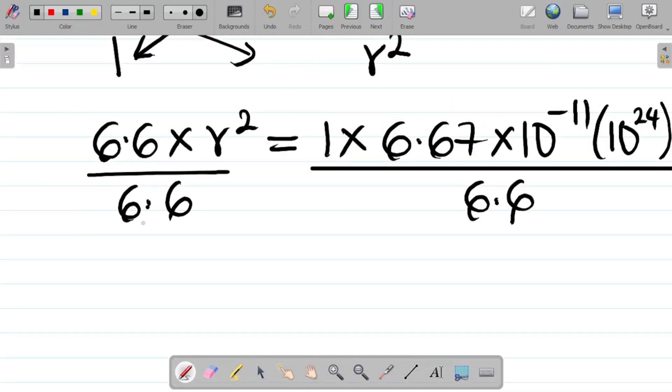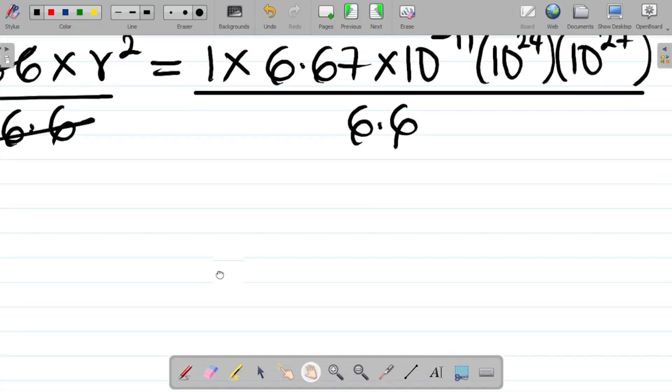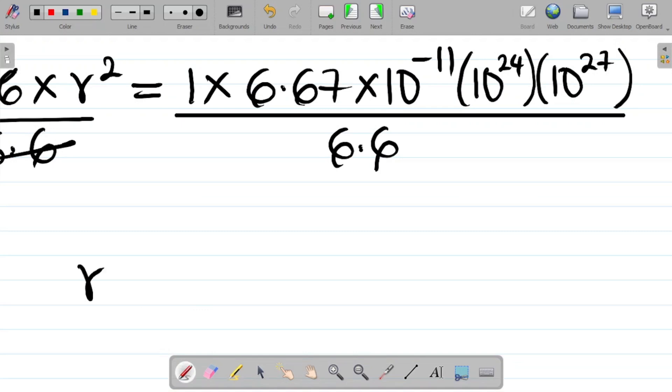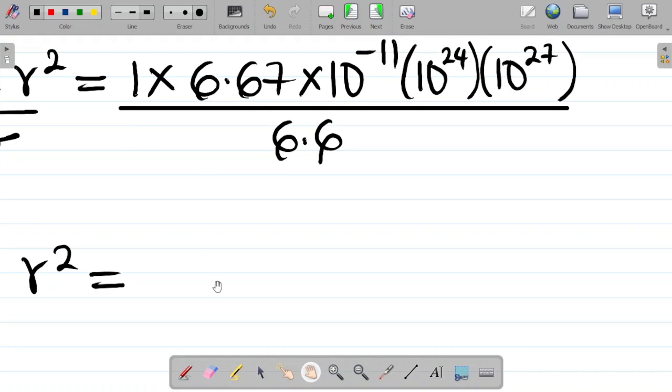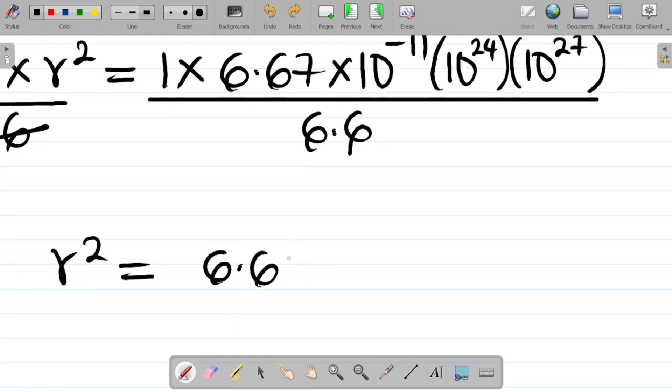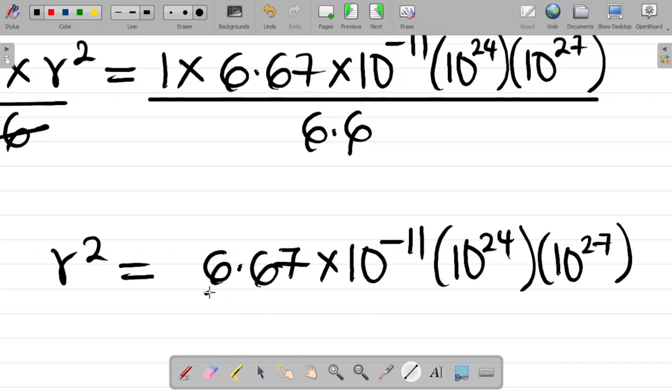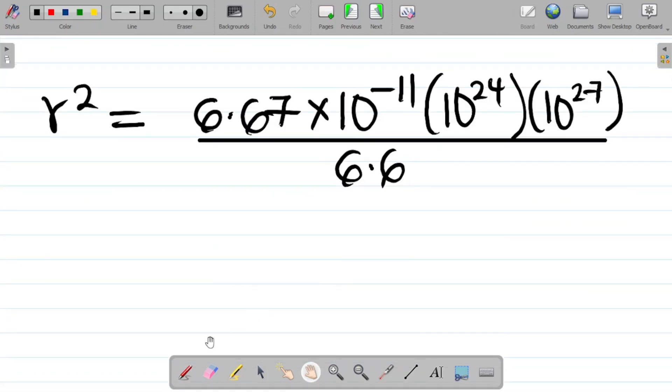From this one here, we can see that for me to get the value of R squared, I have to divide this by 6.6. This whole term here divides also by 6.6. From here this cancels this, I will now have that R squared would be equal to 1 times 6.67 times 10 to power minus 11 into 10 to power 24 into 10 to power 27, all over 6.6.